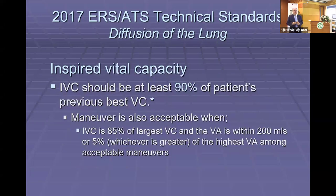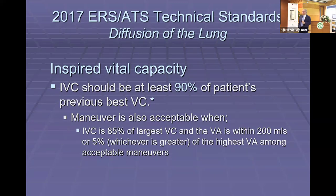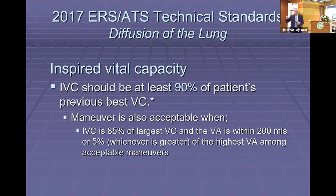We want to make sure the patient takes a deep breath of the test gas. We compare their other measurements of vital capacity and say they need to take at least 90% of that, ensuring their lungs are filled with the test gas. But if by chance they only reach 85% and have very repeatable measurements of their VA value, then that's also usable information.